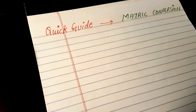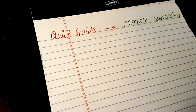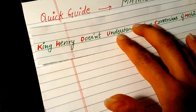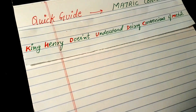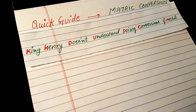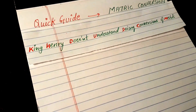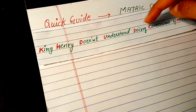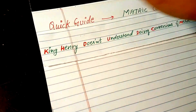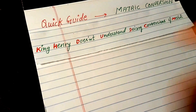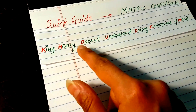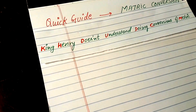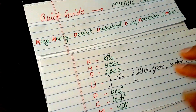This will be a quick video and I'm going to run you through a sentence: 'King Henry doesn't usually do conversions of metrics.' You want to take the first letter of each word — K means kilo, H hecta, D deca, U unit, D deci, C centi, M milli.